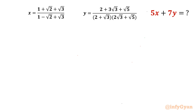Welcome back to Infigyan, my dear friends. Today in this video we are going to take up one very interesting radical puzzle. Here xy is known and we have to evaluate the expression 5x plus 7y. x is given as (1 + √2 + √3) / (1 − √2 + √3), and y is (2 + 3√3 + √5) / ((2 + √3)(2√3 + √5)). So let's get started.